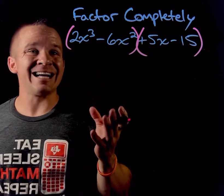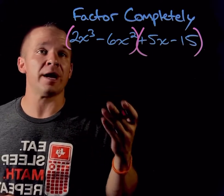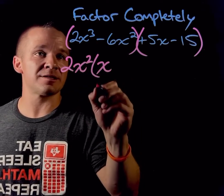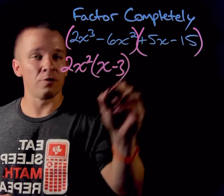So for the first one, I can take out a 2x squared. They both are divisible by 2x squared. And when I do that, what I'm going to have left over is going to be an x and then minus 3.